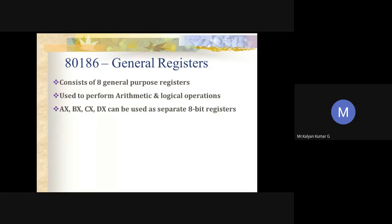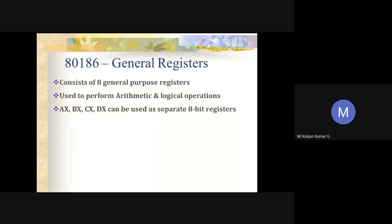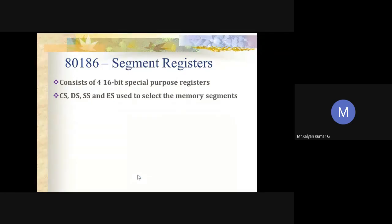Moving on to general registers: the 80186 processor consists of eight general-purpose registers used to perform arithmetic and logical operations. Out of these eight registers, four — AX, BX, CX, DX — can be used as 16-bit registers or split into pairs and used as separate 8-bit registers. This is the same functioning as in 8086.